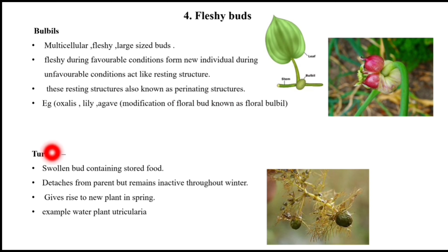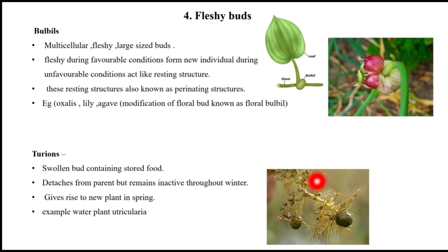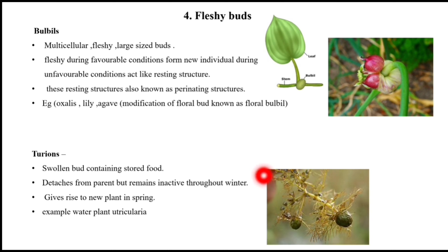Turions are swollen buds that store food. They are detached and remain inactive, and when spring season arrives, new plants develop. An example is Utricularia, which is a water plant.